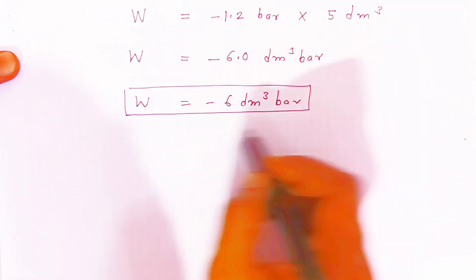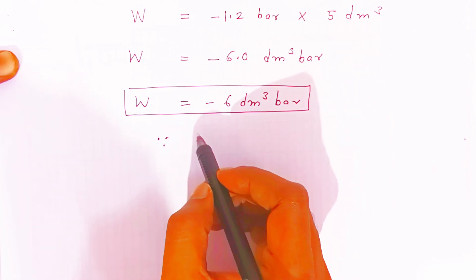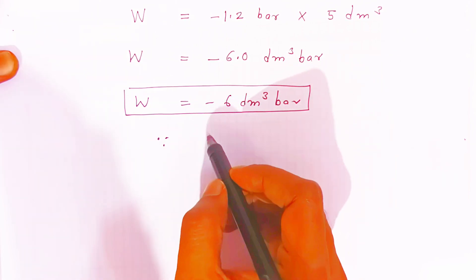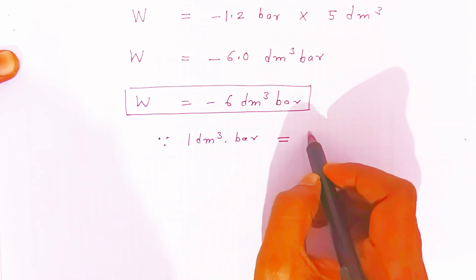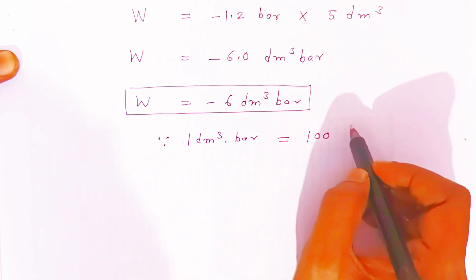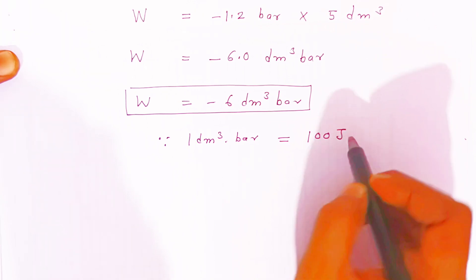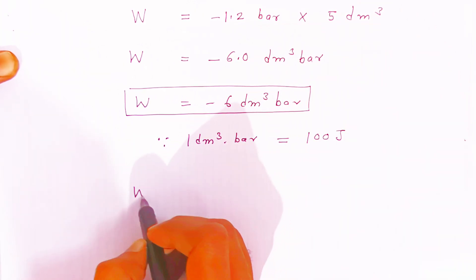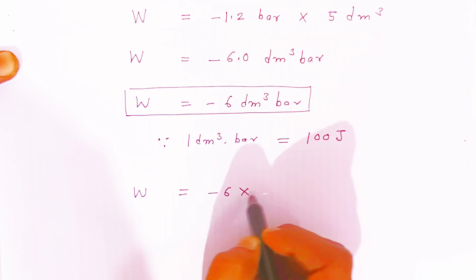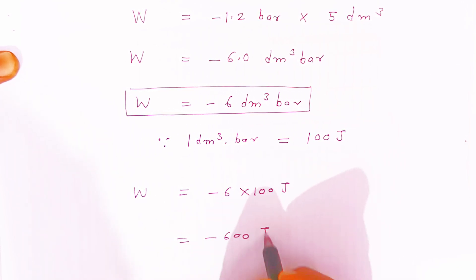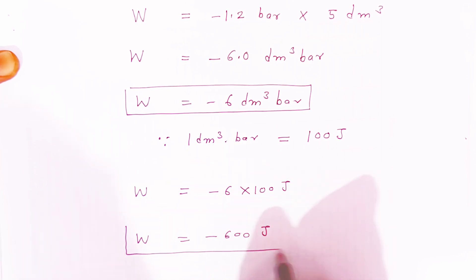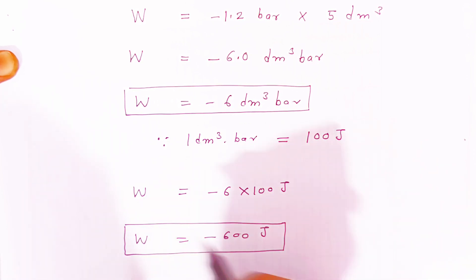So this is the answer students, first answer in dm³ bar. Now since you know 1 dm³ bar is equal to 100 joule. Therefore students, work done will also equal to minus 6 into 100 joule. That is it will come minus 600 joule.